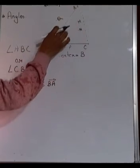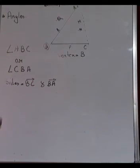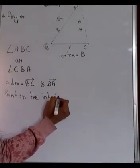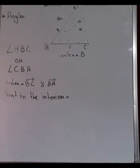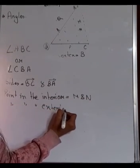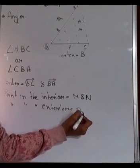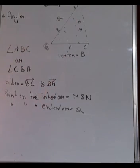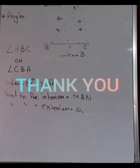Now, for the interior and exterior of an angle: the points which lie between the boundary are known as the interior of the angle, and points outside the boundary are the exterior. In this figure, M and N lie in the interior of angle ABC. The point Q lies in the exterior of angle ABC. Points R and P lie on angle ABC itself.